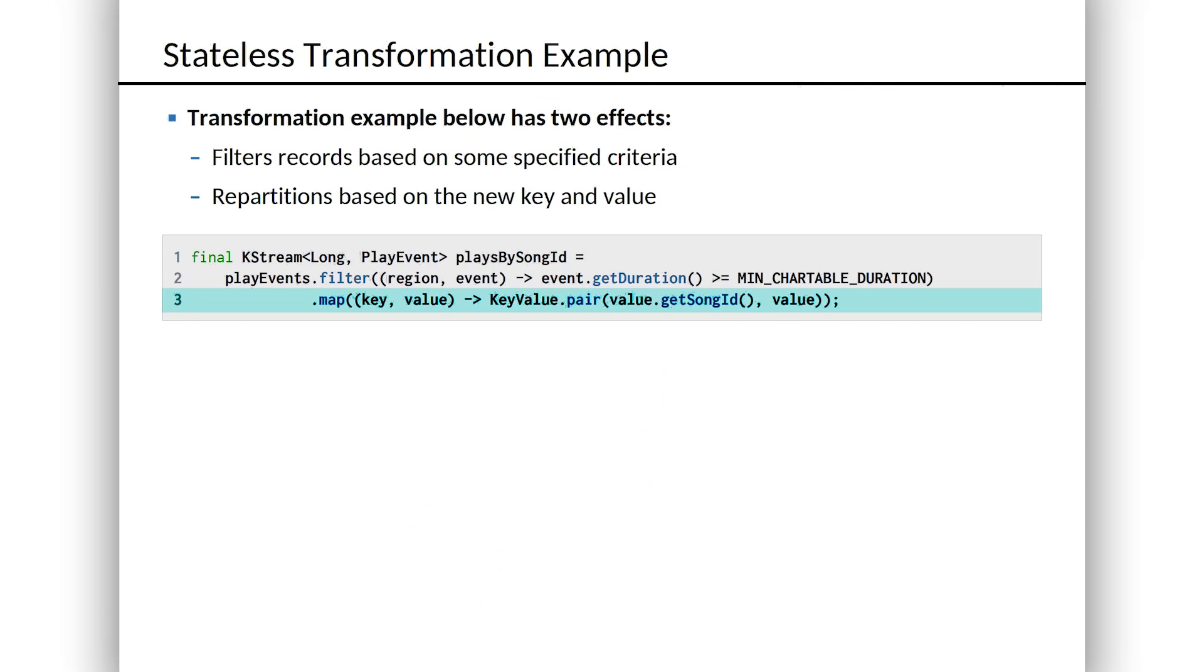Because we want to repartition this, we want to throw away the old key. We don't care about it at all. We're effectively creating a new key value pair. And we have this utility class called key value that you can see inside the Lambda we are calling that. And we're making the new key be the song ID and the new value be the same as the old value. The value is still that play event.